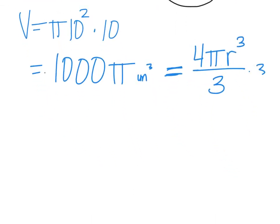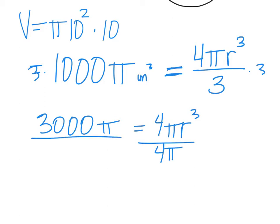We solve this by multiplying everything by 3. 3,000π equals 4πr³. Dividing both sides by 4π.